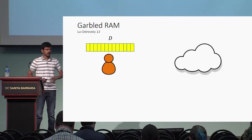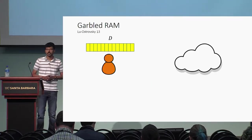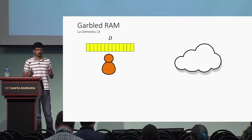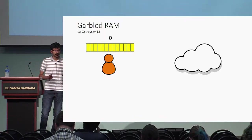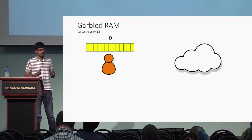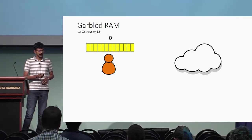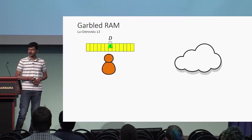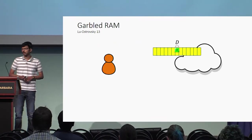Let me start this talk by giving you a brief introduction to garbled RAM, which was introduced by Lu and Ostrowski in 2013. In this setting, there is a user who has a large database D, and he wishes to store this database on the cloud. He encrypts the database and sends the encrypted database to the cloud.